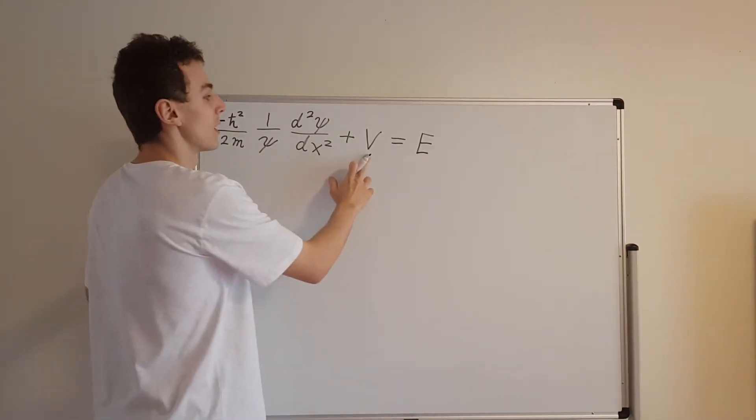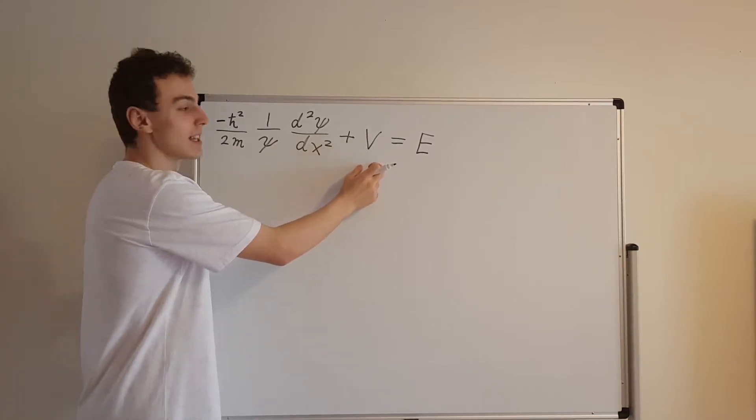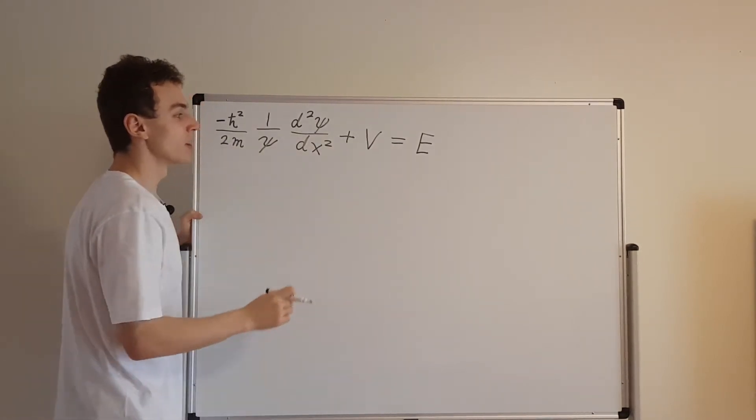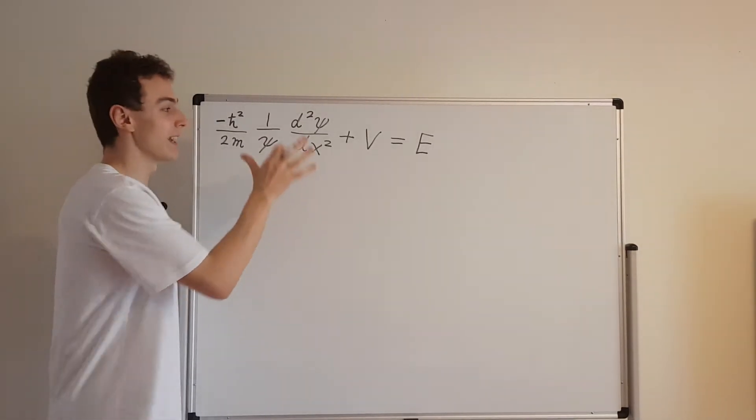We've called E because it's the energy of the particle, and this guy is the potential energy function. So this is not a constant, this is a function that depends on x. So all of this just depends on x. There's no time dependence in this part.